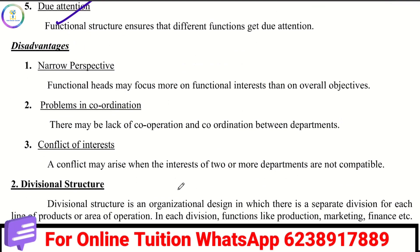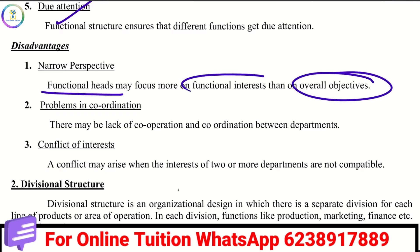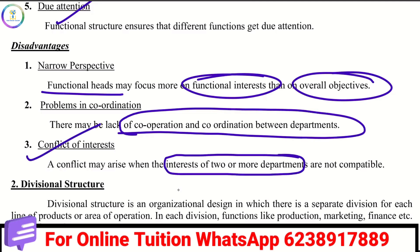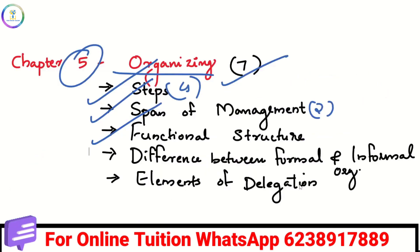The disadvantages include that the head of each department may focus only on their own departmental objective rather than the overall organizational goal. For example, the head of the production department focuses only on the production goal. There are also reduced chances of coordination and cooperation, and higher chances of conflict between departments.